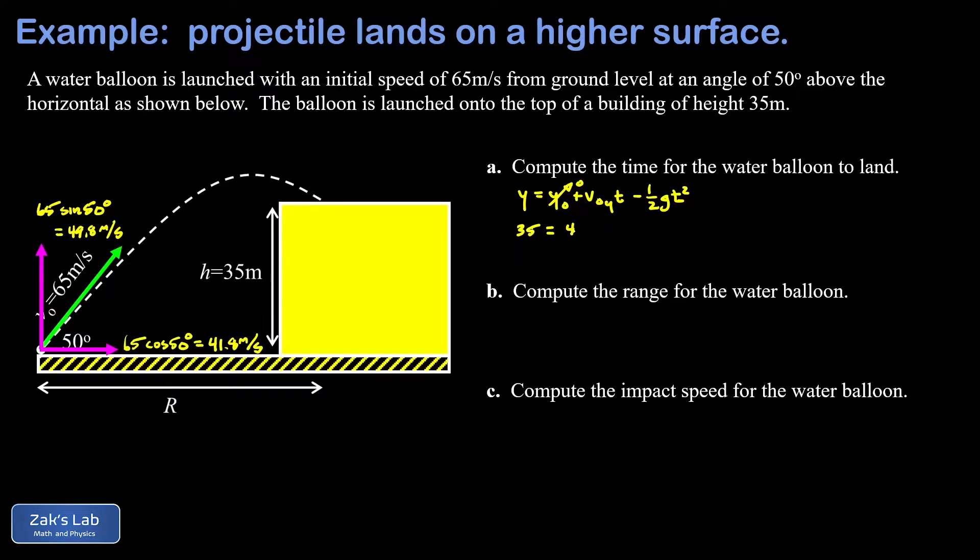V naught y is 49.8, so I have 49.8 t. And then g, we're using 9.8 for that, and half of that is 4.9. So I have minus 4.9 t squared. Now this is a non-trivial quadratic equation. It's nice if we rearrange it so the coefficient of the quadratic term is positive. So I'm going to move all the terms to the left-hand side here, and I have 4.9 t squared minus 49.8 times t plus 35 equals zero.